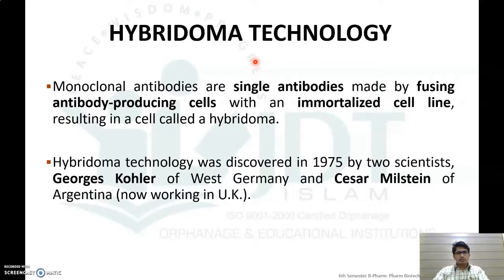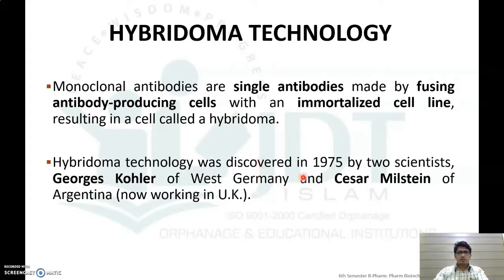Monoclonal antibodies are single antibodies made by fusing an antibody-producing cell with an immortalized cell line, which results in a cell called a hybridoma. This technology was discovered in 1975 by two scientists: George Kohler of West Germany and Cesar Milstein.